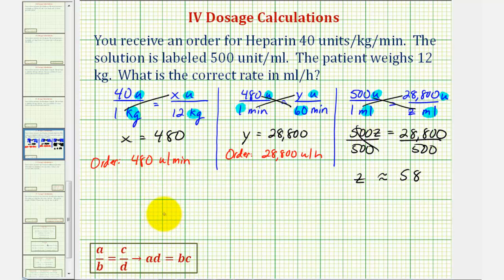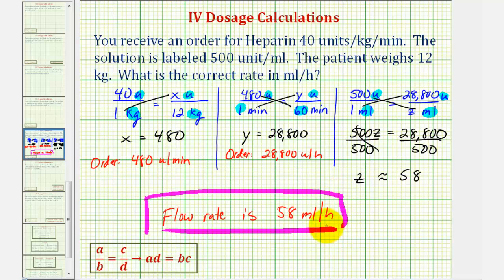And therefore the correct flow rate is 58 milliliters per hour. I hope you found this explanation helpful.